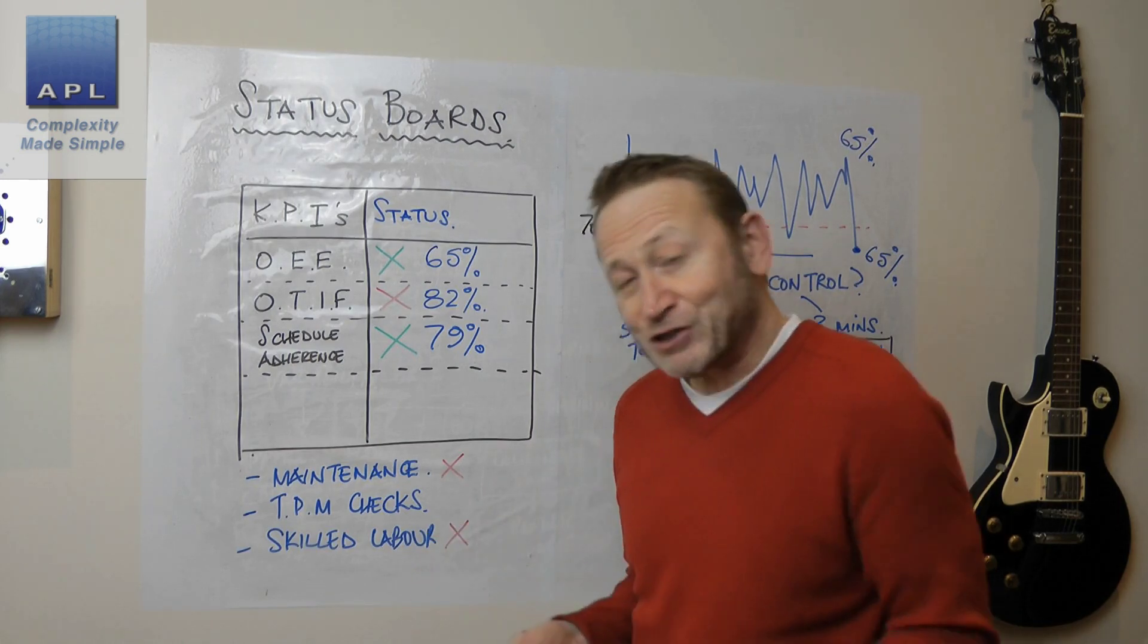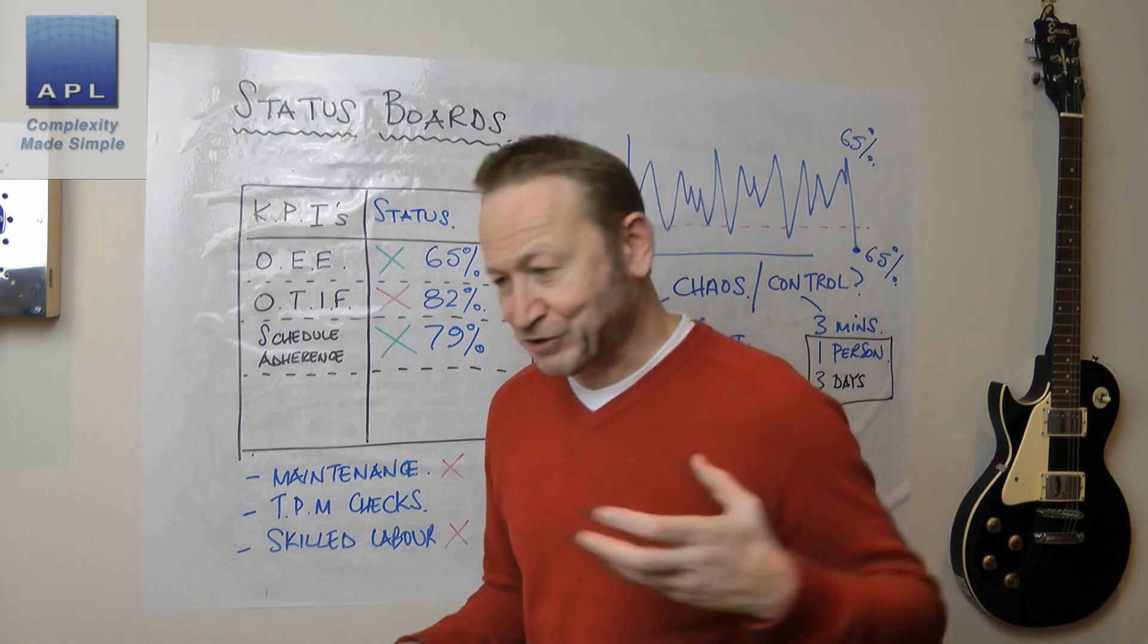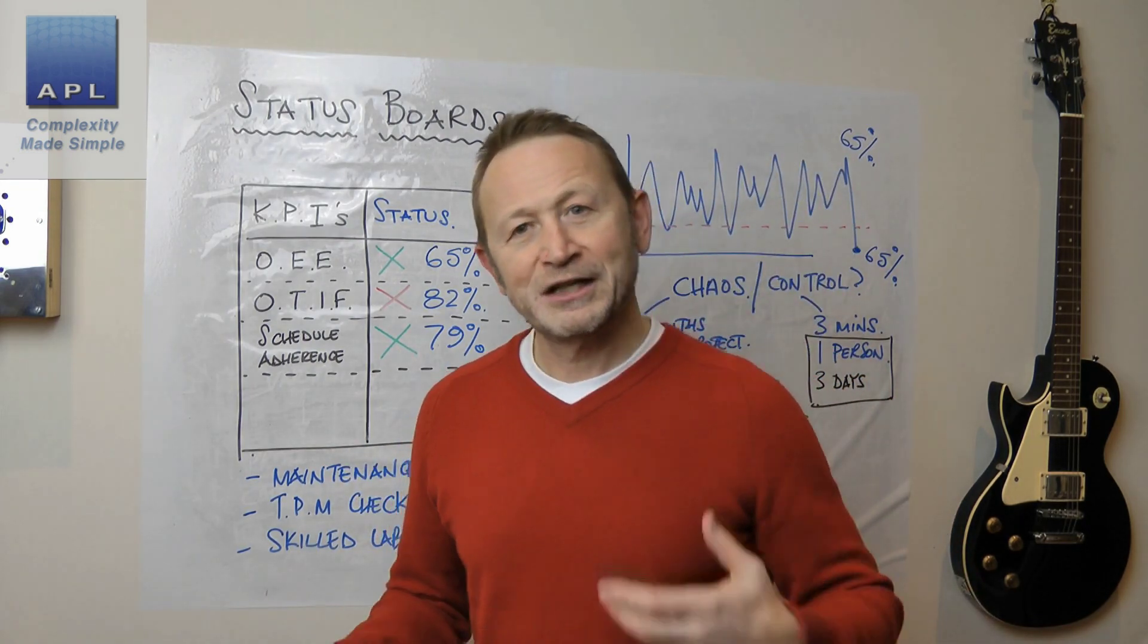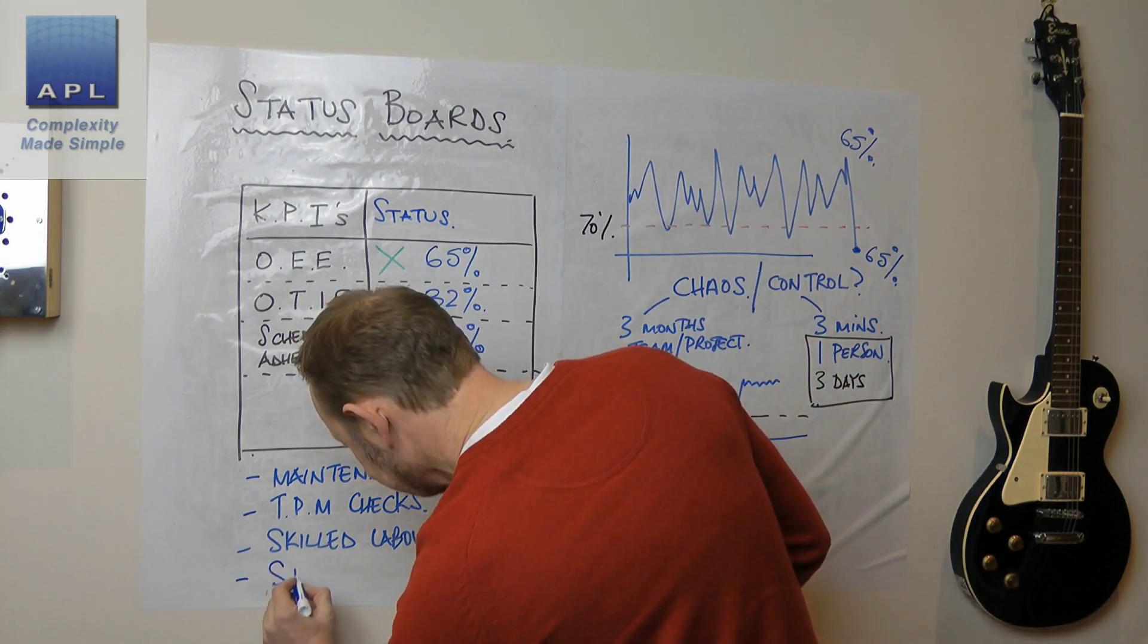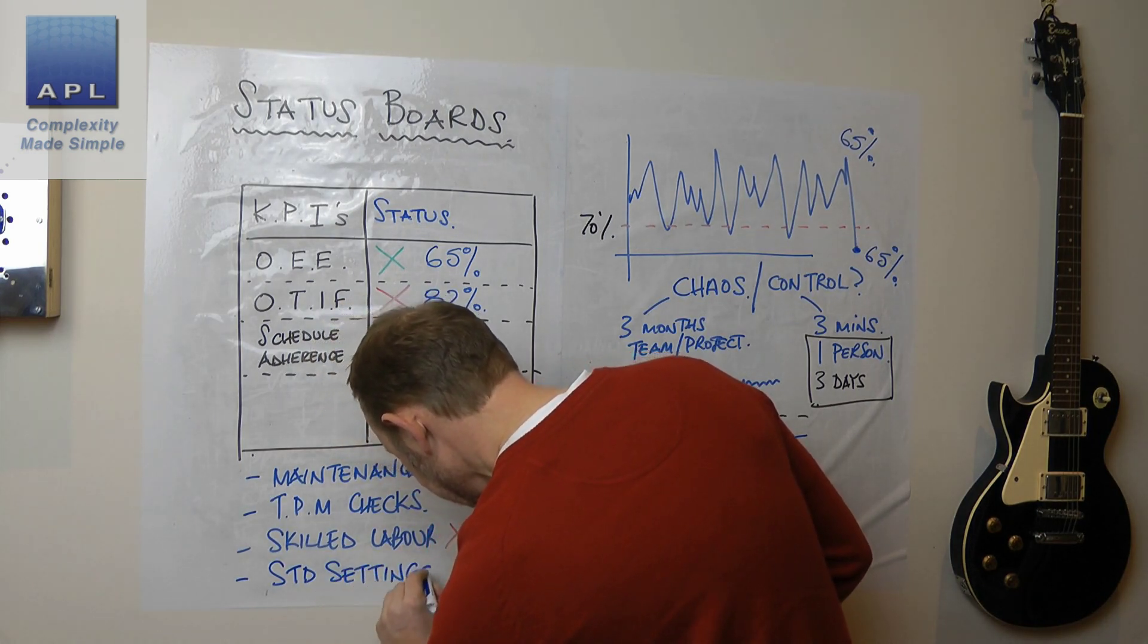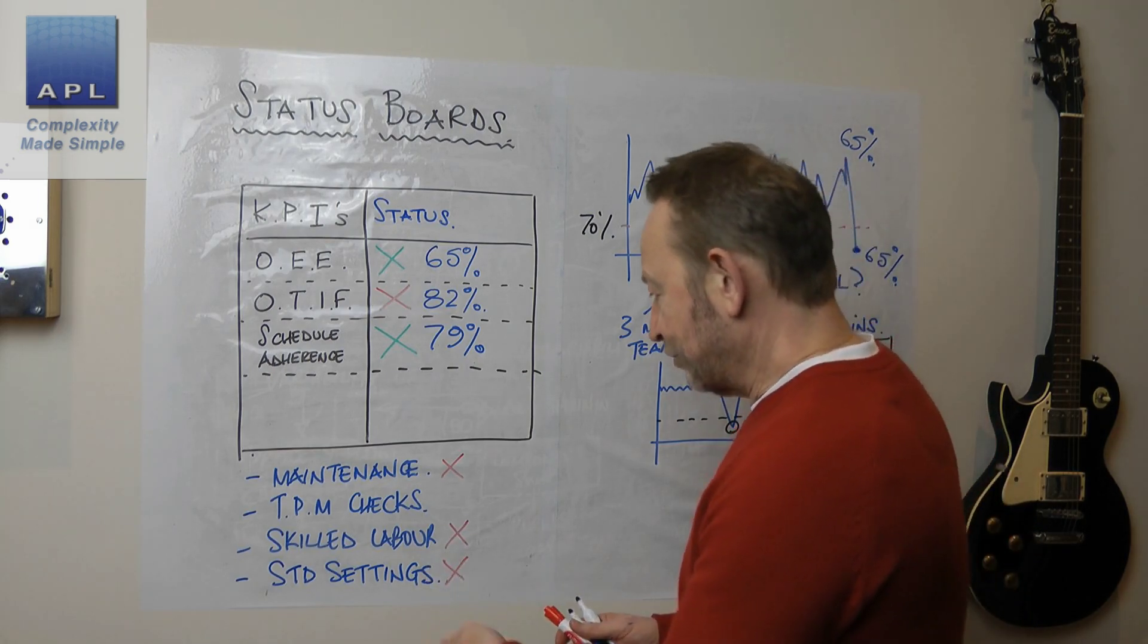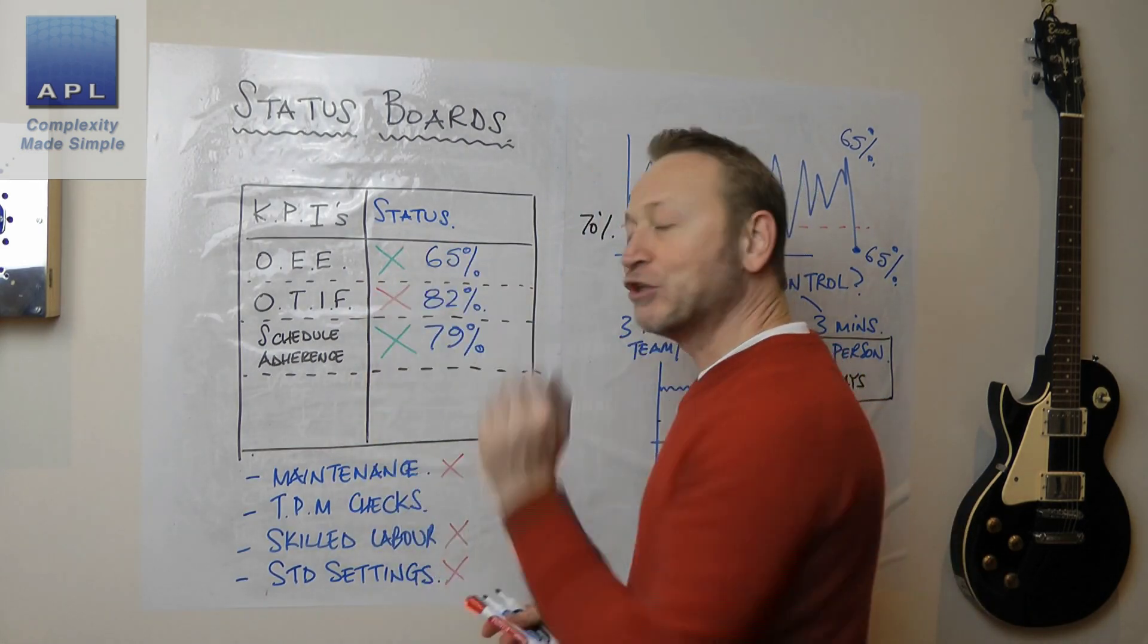The answer is no there. And again, they're just yes or no statuses. You're either where you should be, as in all your skilled people are in and therefore everything's right with the world. All your maintenance is being done, therefore everything's right with the world. What else might you have here? You might have our standard settings being used. Yeah. So again, what's the status? Yes or no?